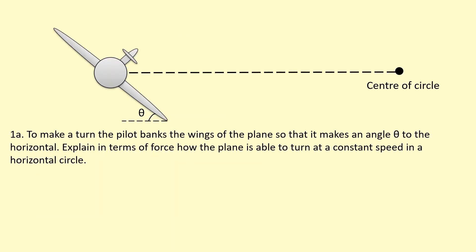To make a turn, the pilot banks the wings of the plane so that it makes an angle theta to the horizontal. Explain in terms of forces how the plane is able to turn at a constant speed in a horizontal circle. So the center of the circle is all the way on the right hand here and we get the plane coming towards us.